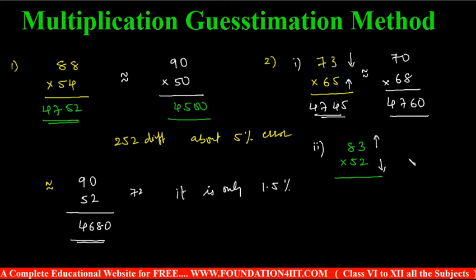52 minus 2 is 50. Same number you can increase for this, 85. One number you can make nearest to tens. Then you can verify this is 4316, but this is 4250. Here you will get hardly 1.5 to 2 percent error by guessing in this way.